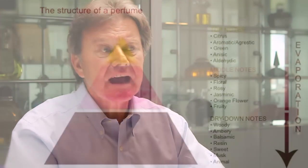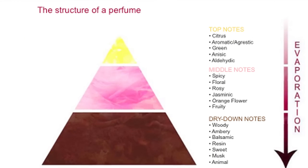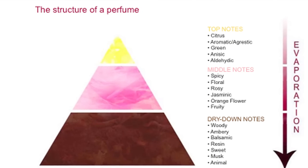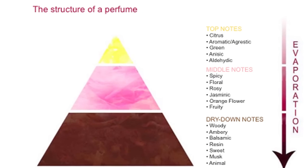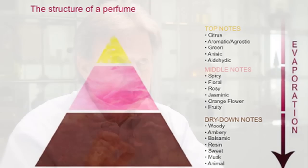So the structure of the perfume. Usually when we want to visualize a perfume, we will visualize it as a pyramid — a pyramid that we will divide into three parts.